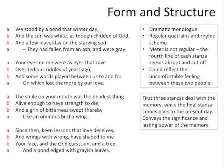The metre in this poem, however, is not that regular. If we read it aloud, you'll notice the fourth line seems a little abrupt and cut off: 'We stood by a pond that winter day, and the sun was white as though chidden of God, and a few leaves lay on the starving sod. They had fallen from an ash and were grey.' Each fourth line feels a bit cut off compared to the others, which might reflect the uncomfortable feeling between the two people, or the idea that the relationship was cut short.